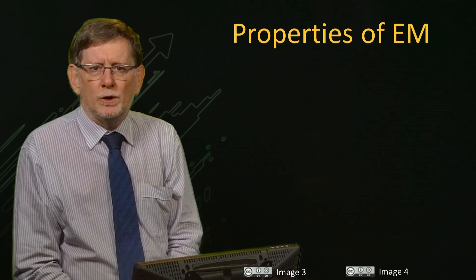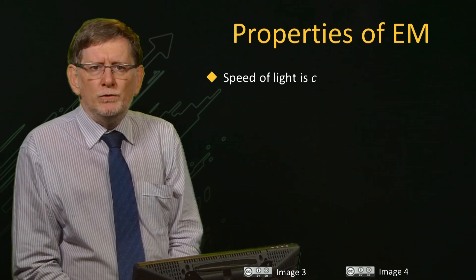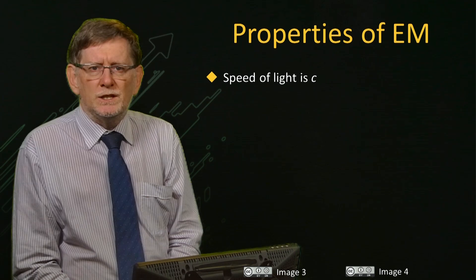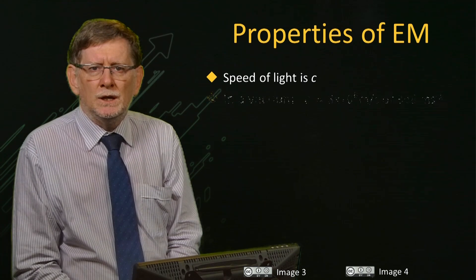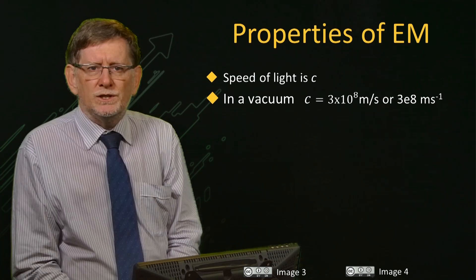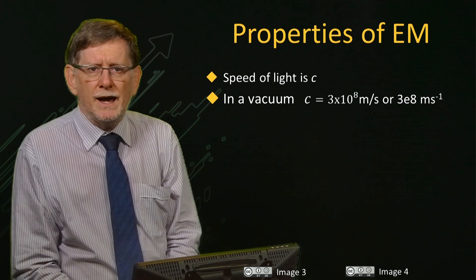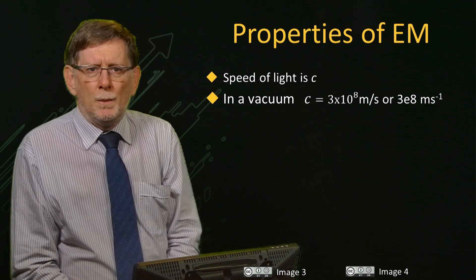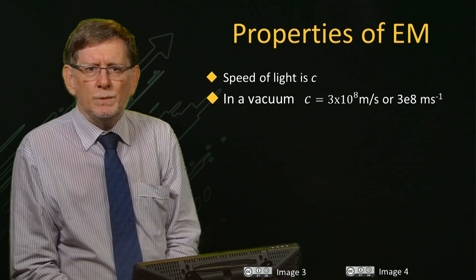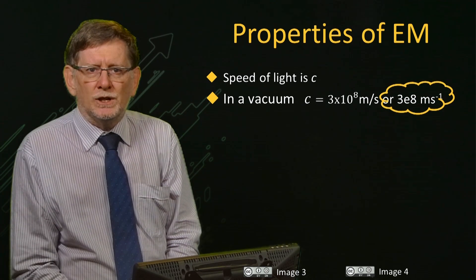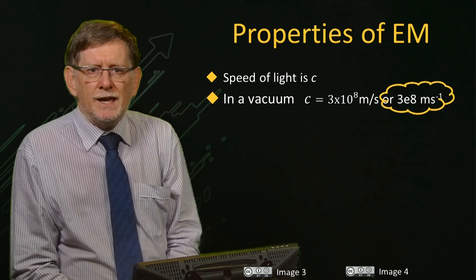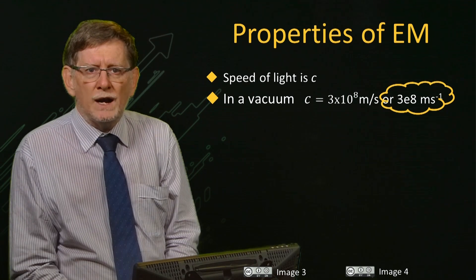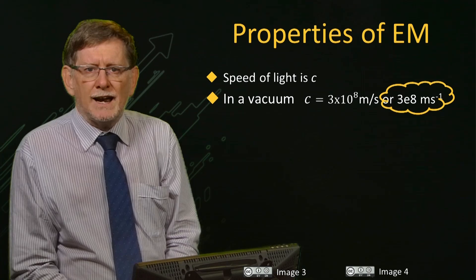Let us now consider some of the important properties of electromagnetic radiation. It moves at a speed that we all know as the speed of light, which has the symbol C. In a vacuum, this is 300 million, or 3 times 10 to the 8th metres per second. Some of you may have learnt 186,000 miles per second, but in this course we will use SI units, which are based on metric units. We will also use shorthand nomenclature, such as 3E8 metres seconds to the minus one, which means exactly the same thing.